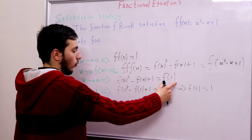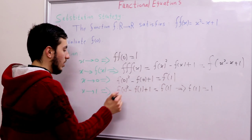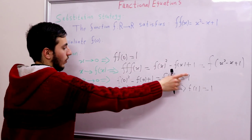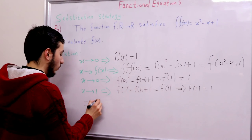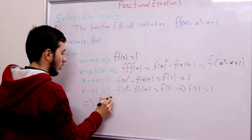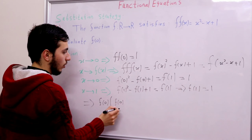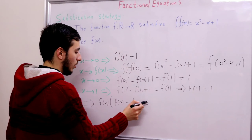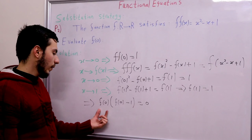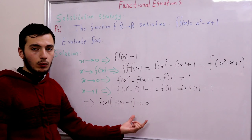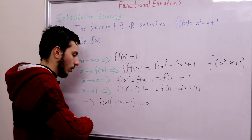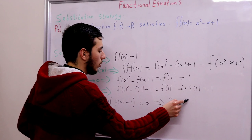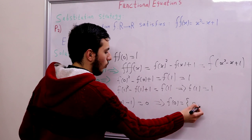So we have f(1) = 1, which means the equation for x = 0 becomes: f(f(0)² - f(0) + 1) = 1. Since f(1) = 1, the argument equals 1, so f(0)² - f(0) + 1 = 1. That simplifies to f(0)·(f(0) - 1) = 0, meaning f(0) = 0 or f(0) = 1. We have two cases to discuss.